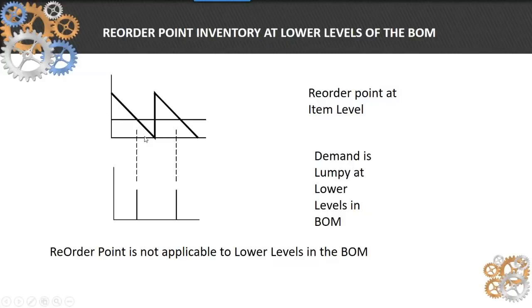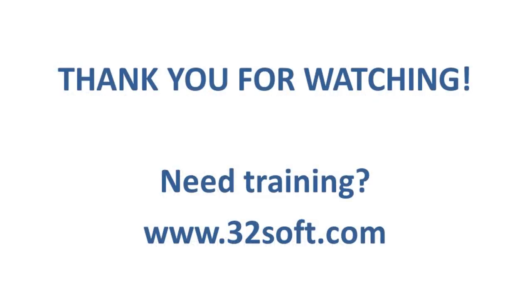So when you have a bill of material parent-part relationships, the only demand that occurs is when you launch an order for the parent, and that makes the reorder point logic on a lower level item, a dependent demand item, not work very well. So we tend not to use reorder point on BOMs. We only use reorder point at the top level.